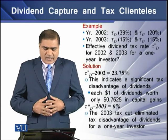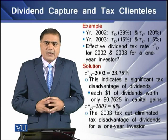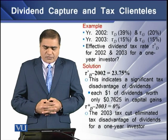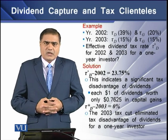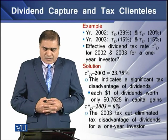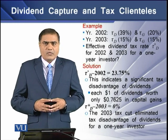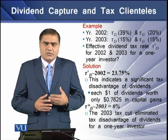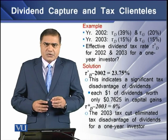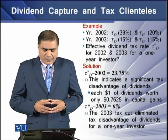Now we have an example. In year 2002, the tax rate on dividend is 39% and the tax rate on capital gain is 20%. In year 2003, these rates are 15% and 15% respectively. The question is: what would the effective dividend tax rate, T* D, be for years 2002 and 2003 for any investor? Putting these figures into the model used to determine the effective tax rate on dividend: